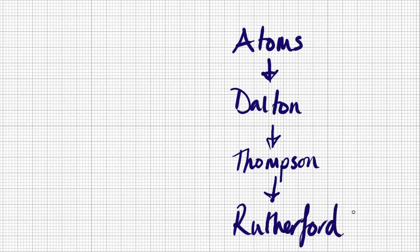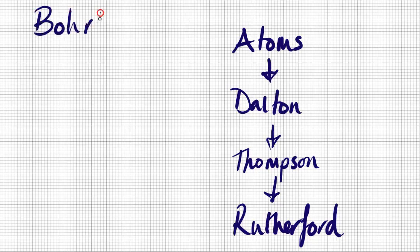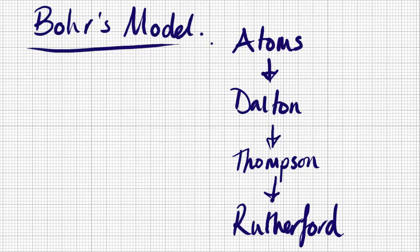Then Rutherford came along and did his scattering experiment, finding that there was actually a small positively charged nucleus where the mass was concentrated — that's called the nuclear model. The model you're most familiar with, though, is actually one step further than that: it's Bohr's model.